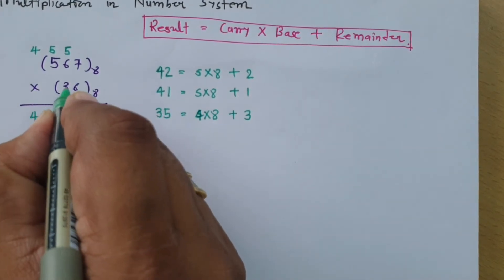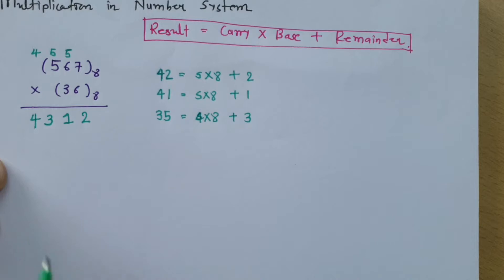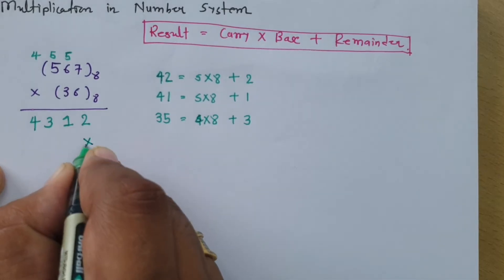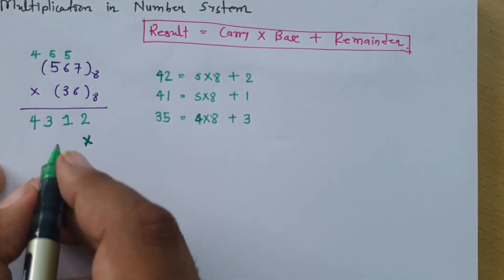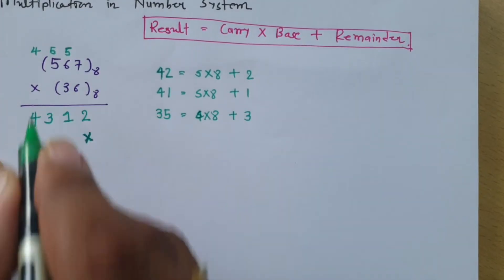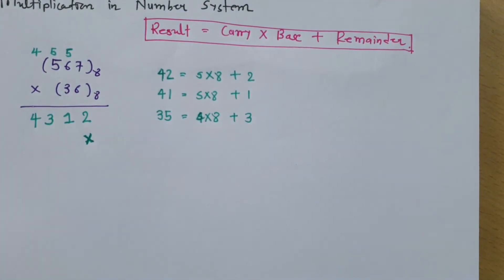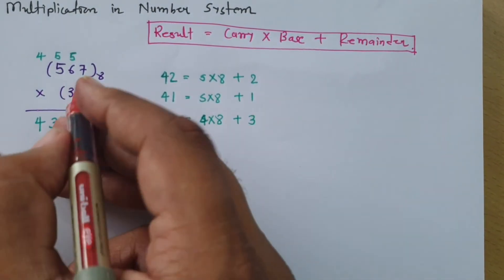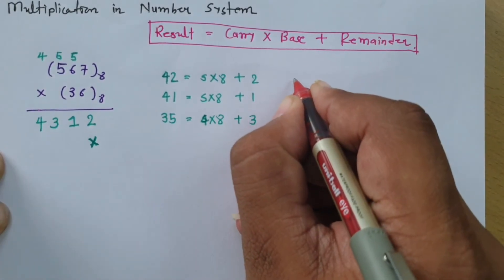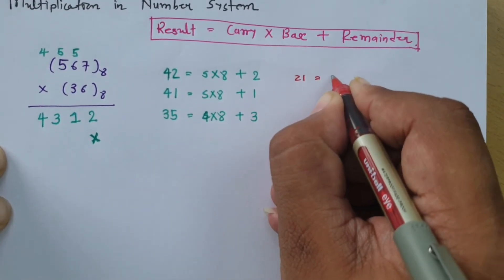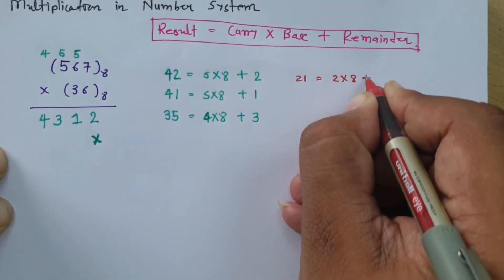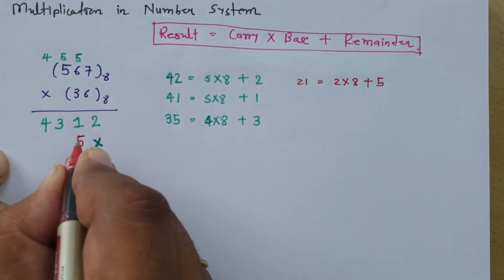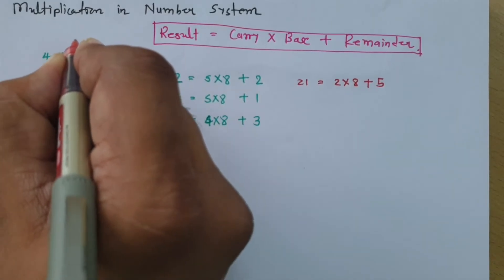Now I need to multiply 3 with 567. Before doing so, I need to add a don't-care padding position. Now multiplying 3 with 7 gives 21. Writing 21 in octal using the formula: 2 × 8 = 16 plus 5 equals 21. So 5 is the remainder, written in the result, and 2 is the carry, placed to the next position.